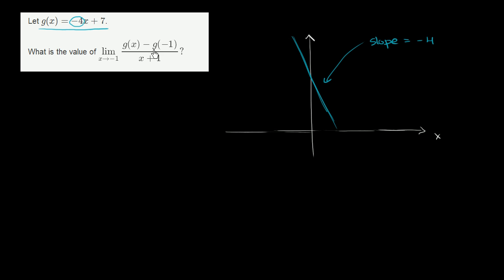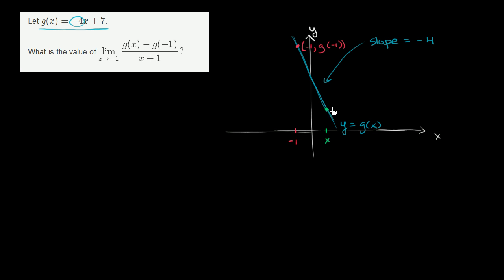They ask us what is the limit as x approaches negative 1 of all of this. So let's plot the point negative 1. When x is negative 1, that's this point right over here, and this point would be the point negative 1 comma g of negative 1. I could call this my y-axis, and this is the graph of y equals g of x. So what they're doing right over here is they're finding the slope between an arbitrary point x, g of x, and this point right over here. So let's take another x — this would be the point x, g of x.